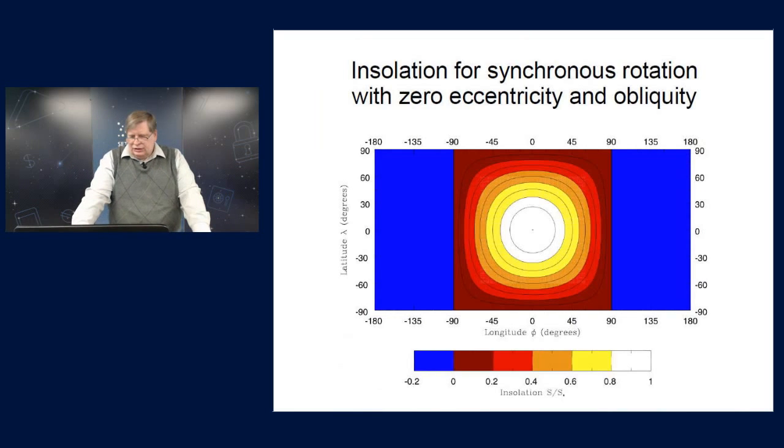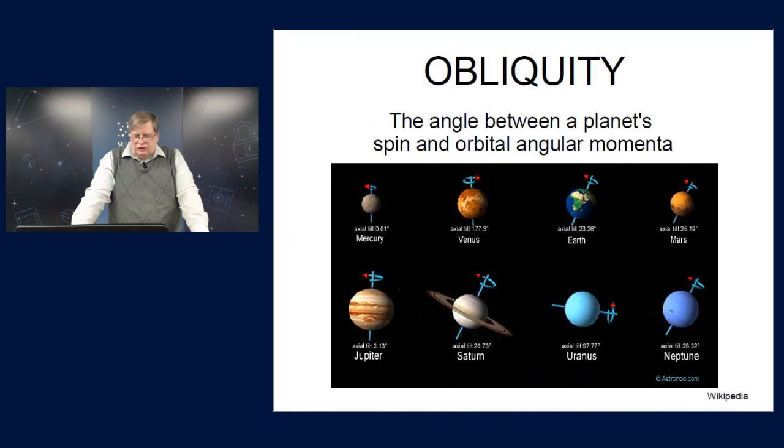Again, here's to remind you about what the obliquity is. And the obliquity in the solar system varies a lot among the different planets. For extrasolar planets, it's essentially unknown. So it could be practically anything as far as we know.